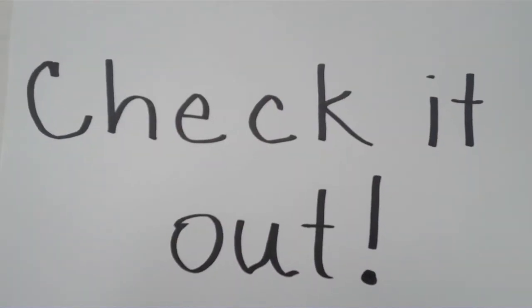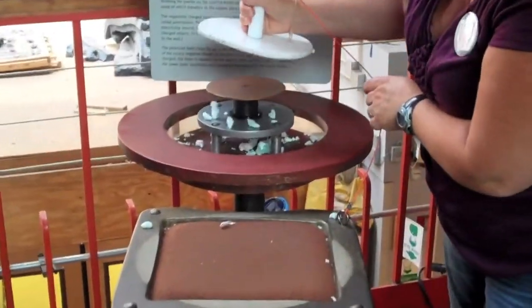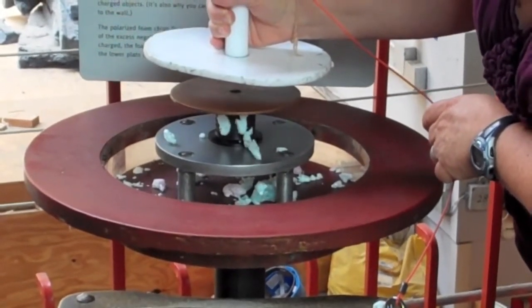So let's check it out. First, I'm going to take the Teflon paddle and I'm going to rub it on the wool and I'm going to place it near the copper plate. Once I do that, you'll see the little guys moving up and down.